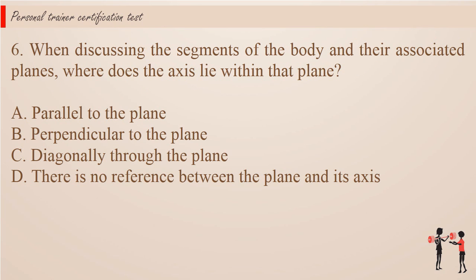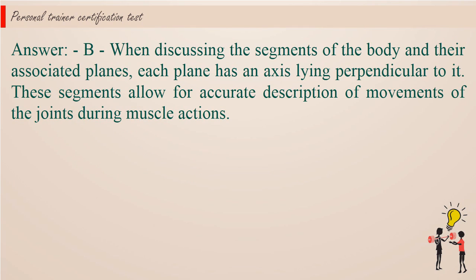Question 6. When discussing the segments of the body and their associated planes, where does the axis lie within that plane? a. Parallel to the plane. b. Perpendicular to the plane. c. Diagonally through the plane. d. There is no reference between the plane and its axis. Answer: b. Each plane has an axis lying perpendicular to it. These segments allow for accurate description of movements of the joints during muscle actions.